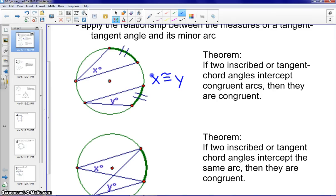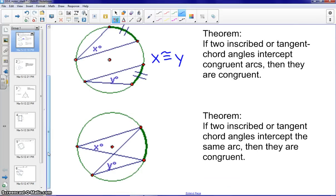The next theorem also regards inscribed angles. Two inscribed or tangent chord angles intercept the same arc. Therefore, they would be congruent. So if they inscribed this same arc, X would be congruent to Y as well.